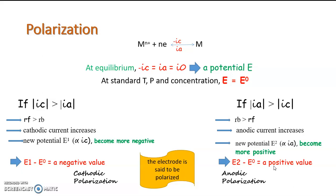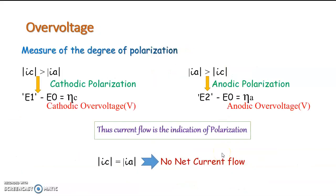In both these cases, the electrodes are said to be polarized. That is, by the presence of an applied voltage or current, the shifting of equilibrium potential can happen due to the change in the equilibrium of the redox process. This is the concept of polarization. If the cathodic current increases due to polarization, it is known as cathodic polarization, and if the anodic current increases, it is known as anodic polarization.